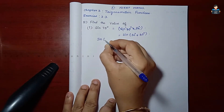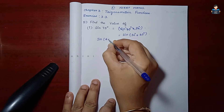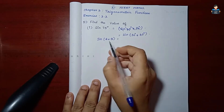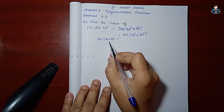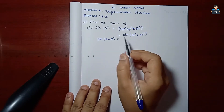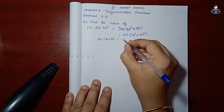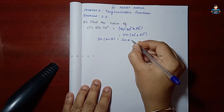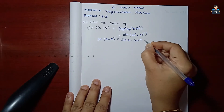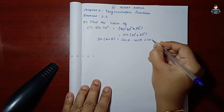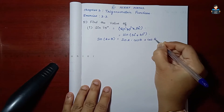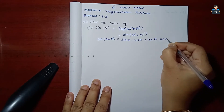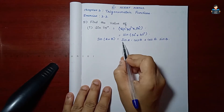We apply the sin(A plus B) formula. The formula is: sin A cos B plus cos A sin B.